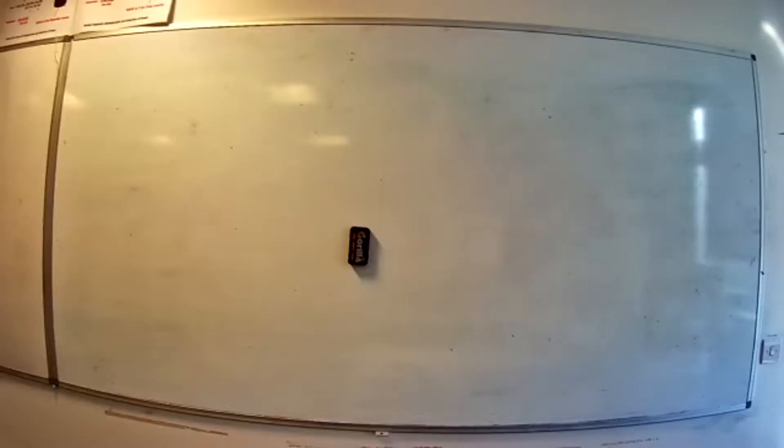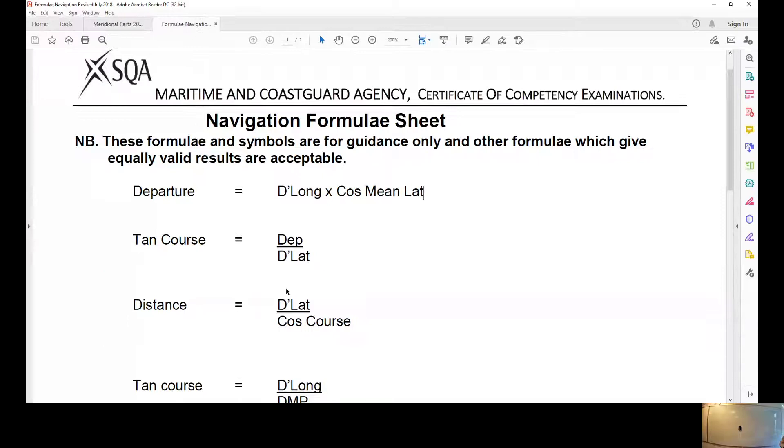Right, what we're going to look at now is a bit of plane sailing. So there are three formulas for plane sailing: departure equals DLong times cos mean lat, tan course equals departure divided by DLat, distance equals DLat divided by cos course. These are the only three formulas we're going to use for plane sailing.